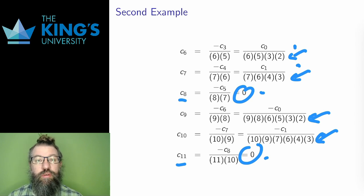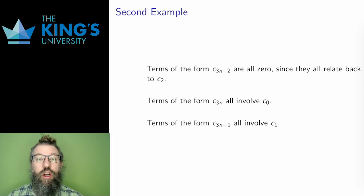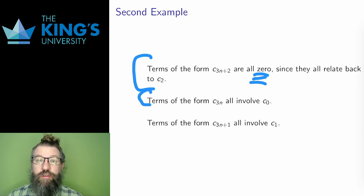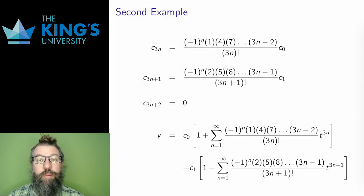So what do I observe? All the terms that are 2 more than a multiple of 3, 2, 5, 8, 11, and so on, are all 0. All the multiples of 3 relate back to C0 with alternating signs and factorial-like denominators. And likewise, all the terms that are 1 more than a multiple of 3 relate back to C1, also with alternating numerators and factorial-like denominators. This is the pattern I observe.